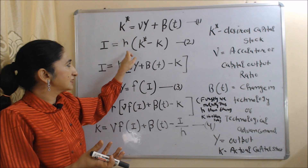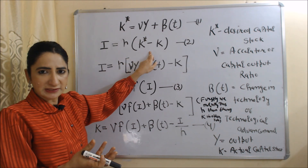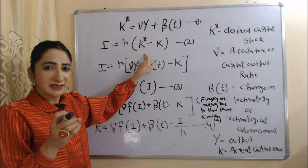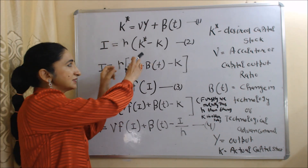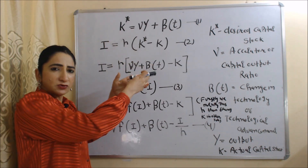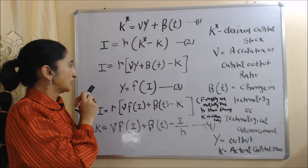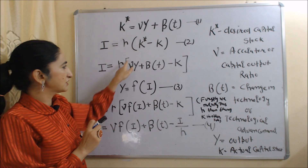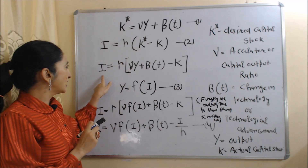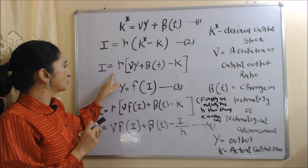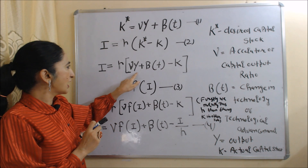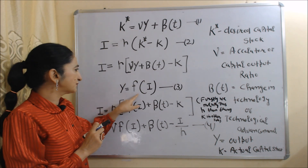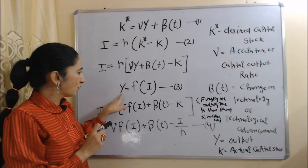λ represents the proportion of this gap. According to this equation, how much we invest depends on the difference between desired capital stock and actual capital stock. When we put the value of K* into our second equation, we get: I = λ[ν·Y + β(t) − K].